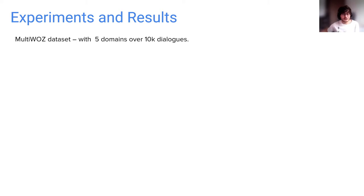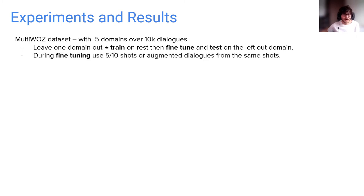We report results on MultiWOZ dataset with five domains with over 10,000 dialogues. During training, we leave one domain as target each time and train on the four other domains and then fine-tune and test on the target domain data. We use five and 10 shots for fine-tuning and our framework uses the same shots to generate augmented data. We report results with both TRADE and ToD-BERT model, but today I'll focus on former for this presentation.